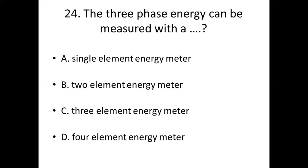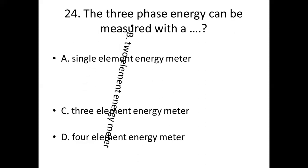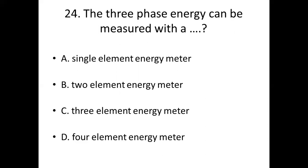24th bit: The three-phase energy can be measured with a dash. Option A: Single Element Energy Meter. Option B: Two Element Energy Meter. Option C: Three Element Energy Meter. Option D: Four Element Energy Meter. Answer — Option B: Two Element Energy Meter.